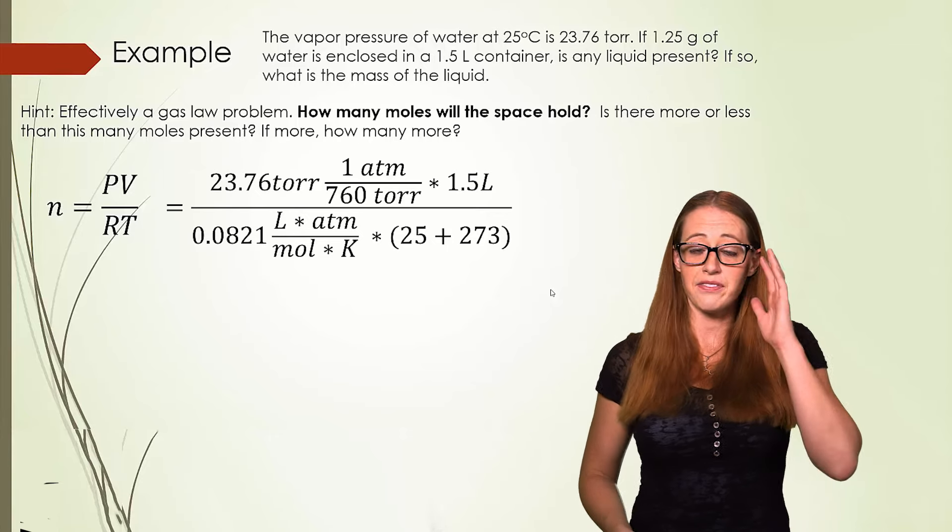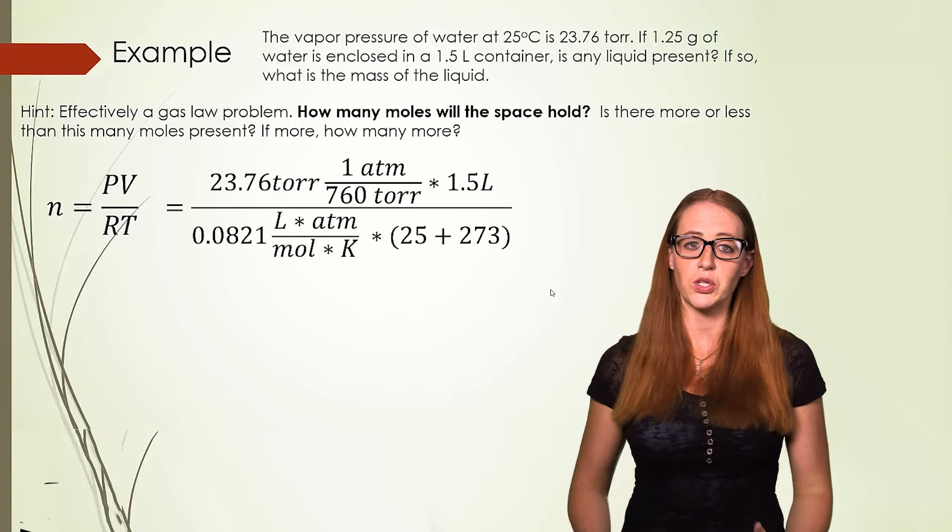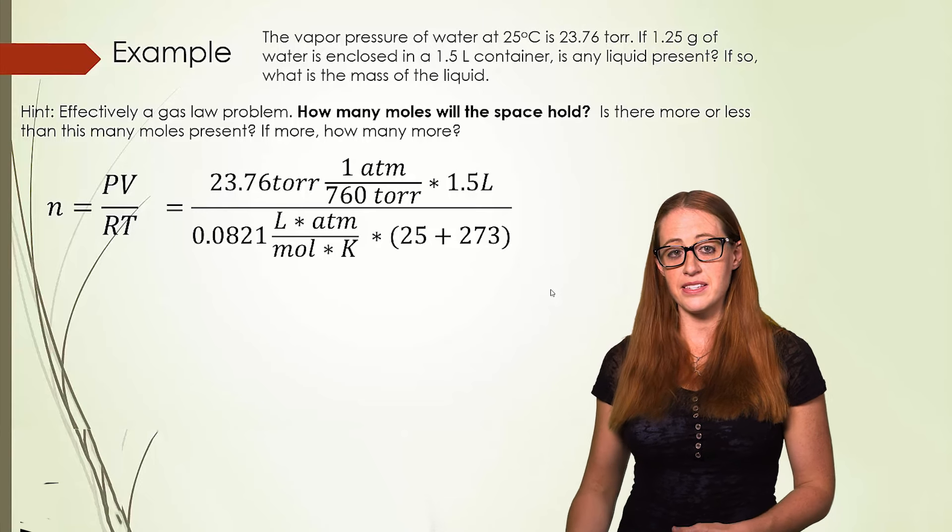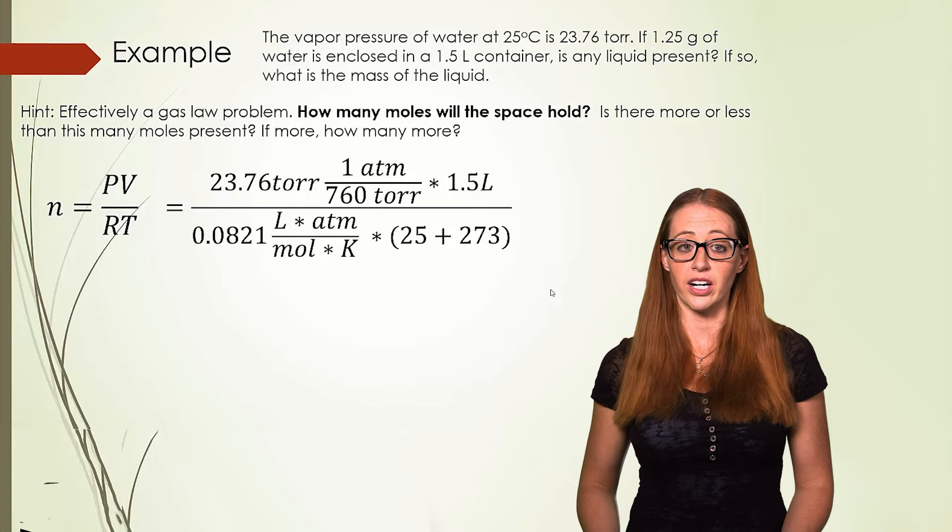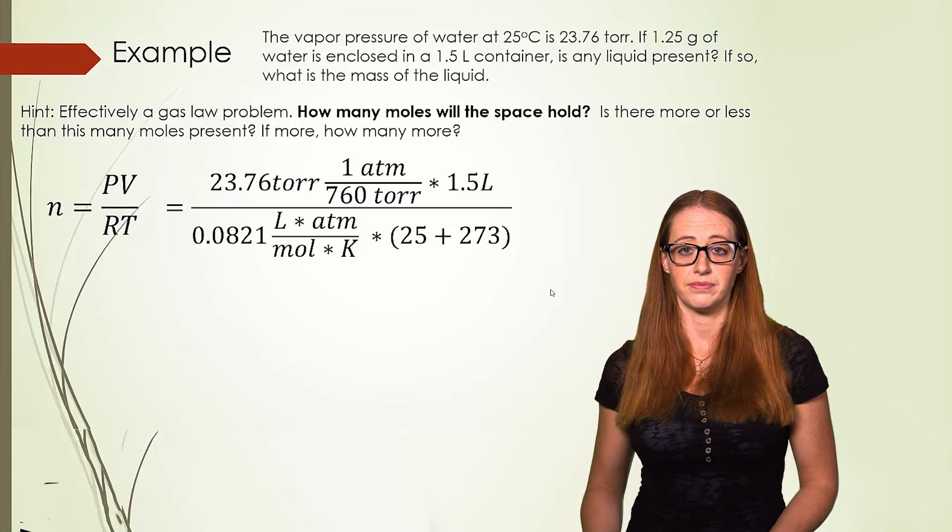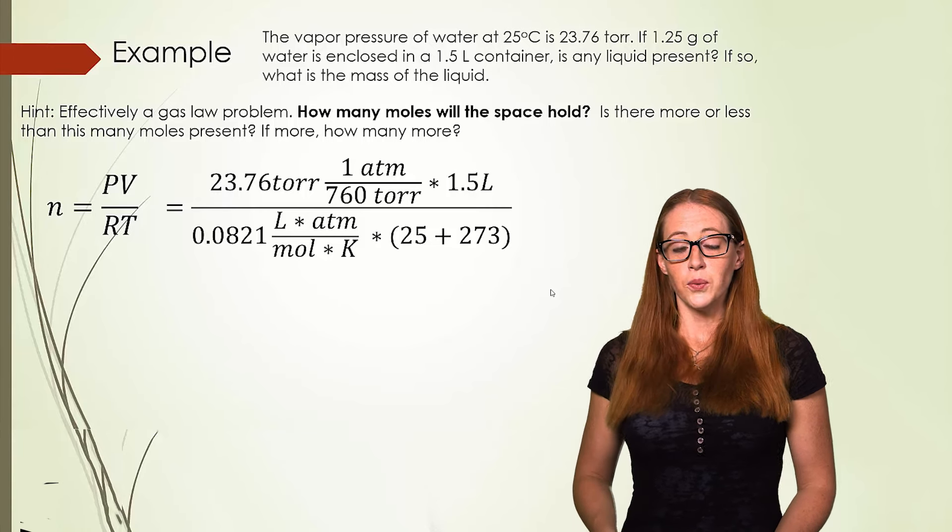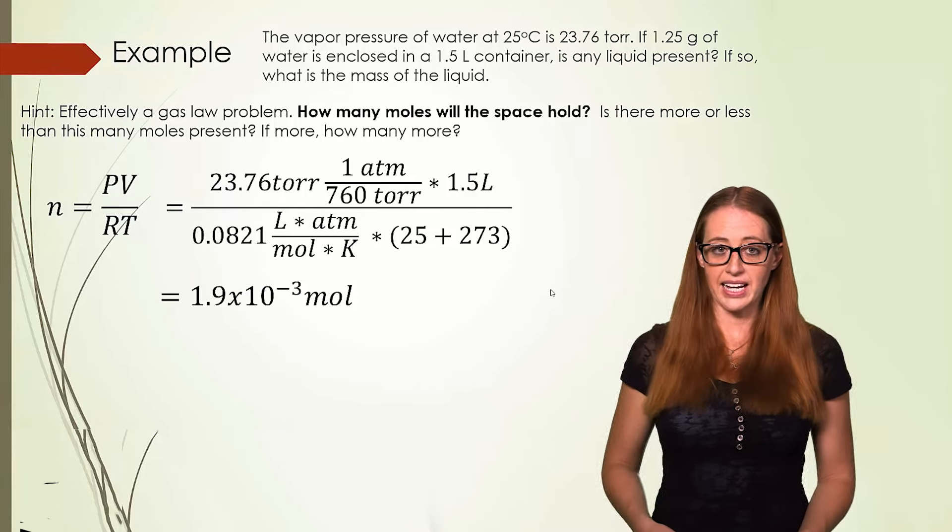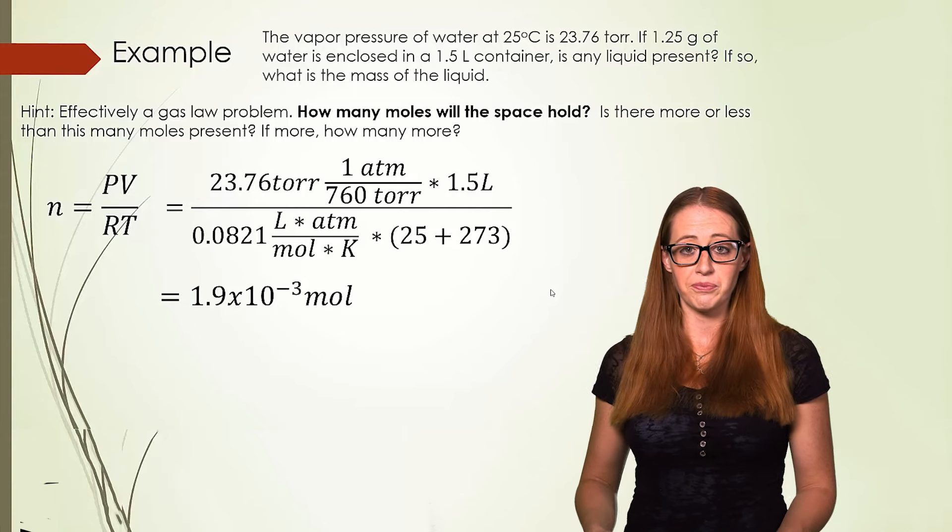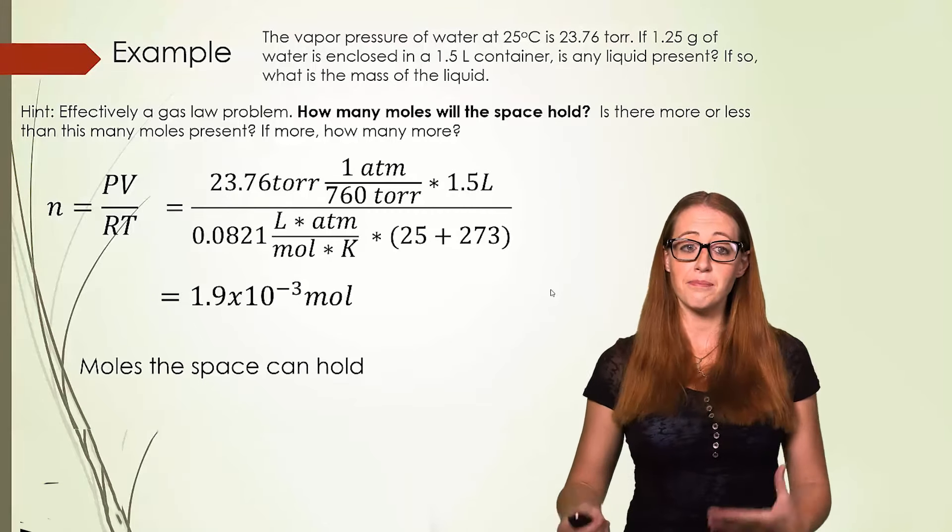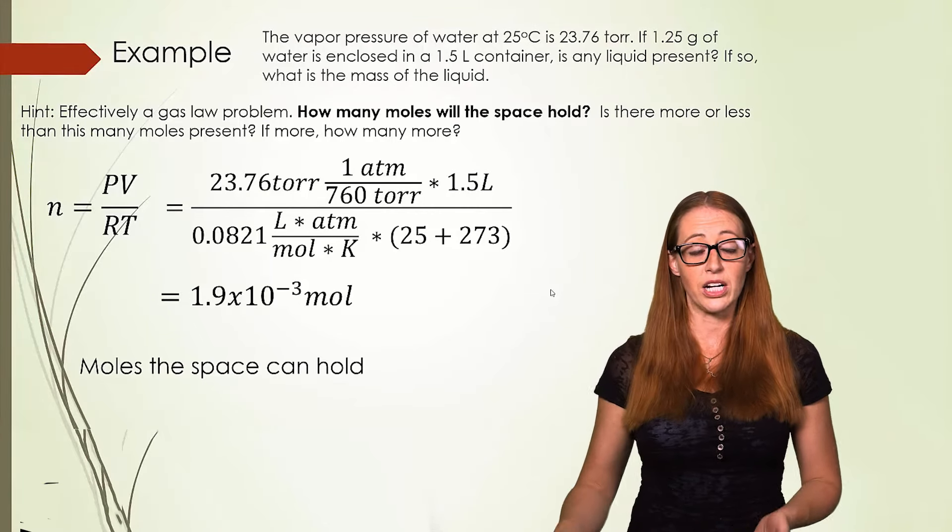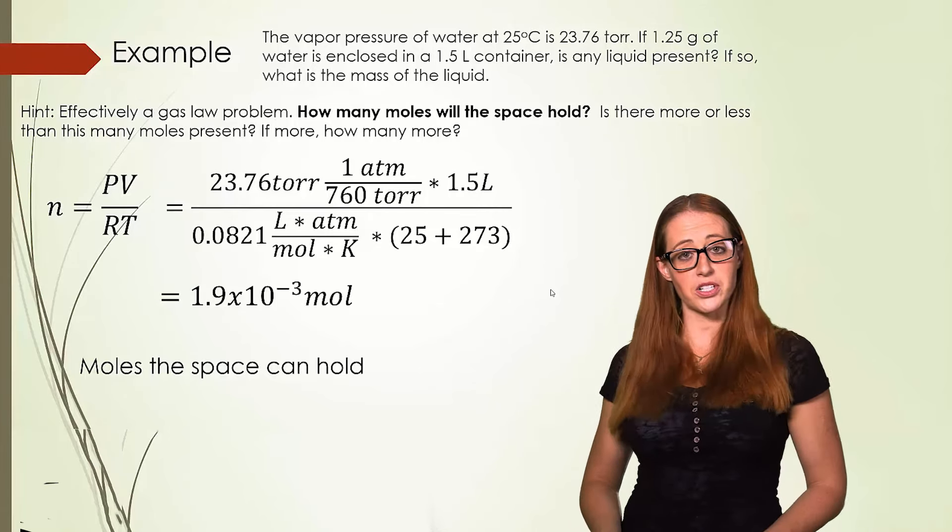Notice that I have to change the vapor pressure from torr into atmospheres. Remember that this is to cancel out with the r constant below it. When we solve this, we get 1.9 times 10 to the negative third moles. Remember that this is the moles of the gas that the space can hold, according to the vapor pressure.